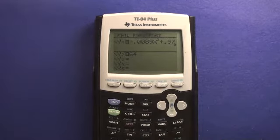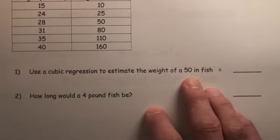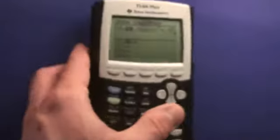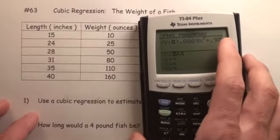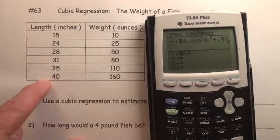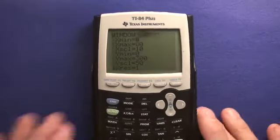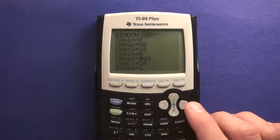Then what we're going to do for part one is estimate the weight of a 50-inch fish. Well, inches is the X value. They want the weight. So we're going to press graph. Now, before we graph, look at the domain, 0 to 40, and then the range is 0 to 160. Press window. I actually went 0 to 80 and then 0 to 300. I just doubled the largest amount.